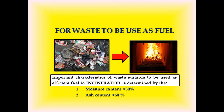The second important characteristic is the ash content of any waste, which should be less than 60%, otherwise too many byproducts will be generated, reducing the performance of an incinerator. The third important characteristic is the rate of combustion — the waste combustibility rate should be greater than 25%, because below that the waste will not be sufficiently combustible and the incinerator won't be effective. Based on these three important characteristics, waste can be determined to be an effective source of fuel for an incinerator or not.